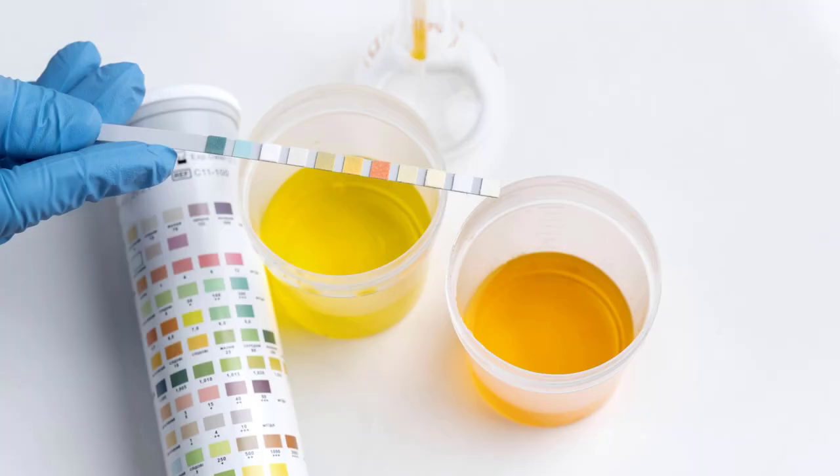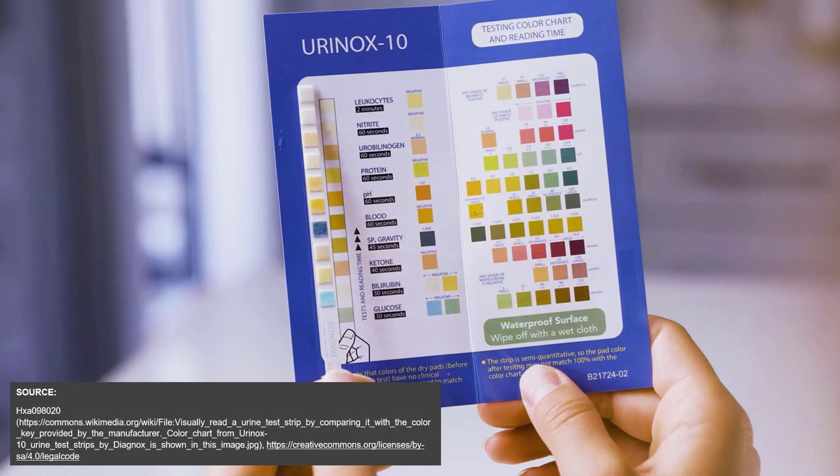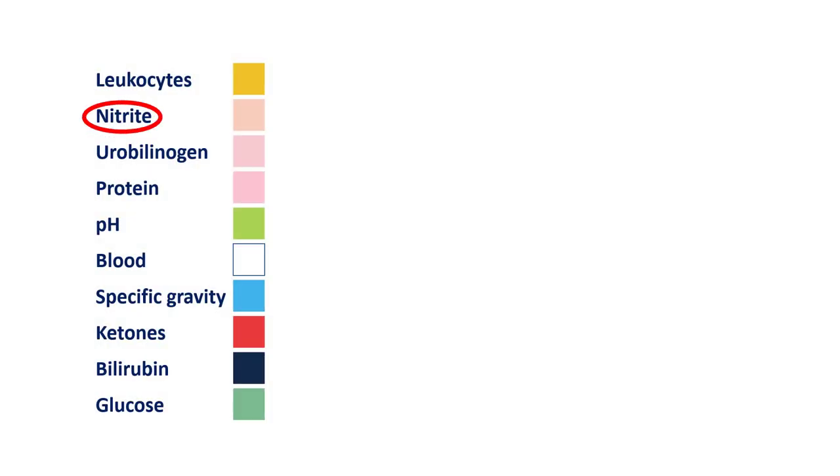The most widely used diagnostic tools are urine test strips, or so-called dipsticks. Urine test strips cannot detect bacteria directly, but certain species of bacteria turn urinary nitrates into nitrites, and that we can detect. However, there are a few limitations you should be aware of.